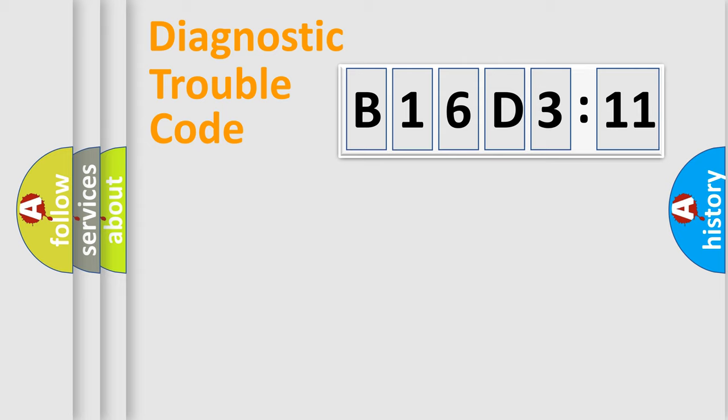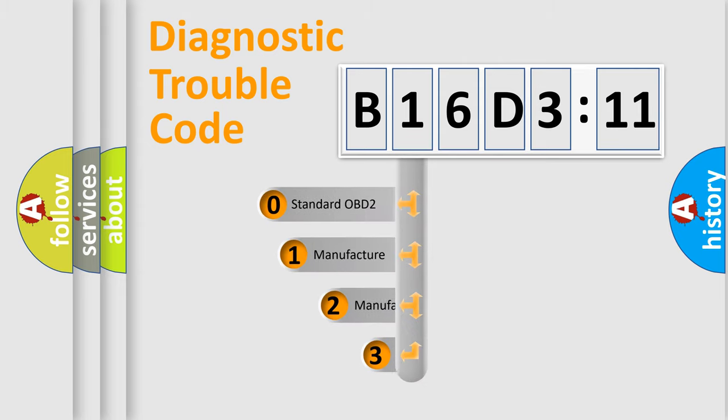Powertrain, Body, Chassis, Network. This distribution is defined in the first character code.